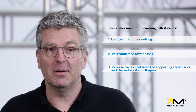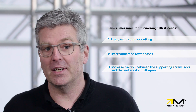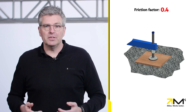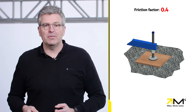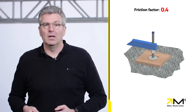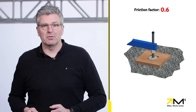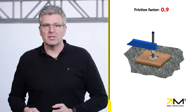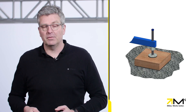Third, increased friction between the supporting screw jacks and the surface it's built upon. For example, a steel screw jack placed on plain wood has a friction factor of 0.4, when embedded 0.6, but if placed on rubber 0.9. Stacked wood pads should be screwed together to achieve the highest friction factor possible.